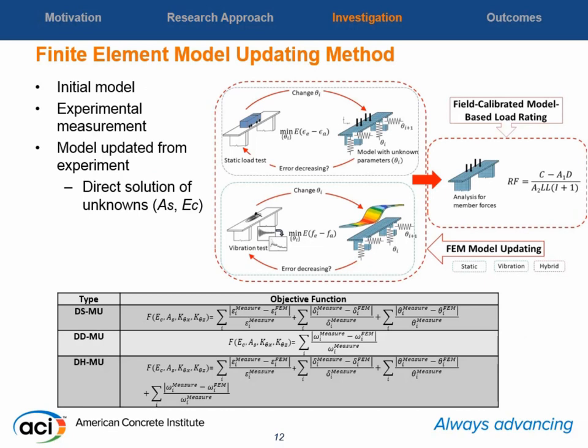For the finite element model, the first step is creating an initial model. We go to the bridge site, gather information about the bridge, measure dimensions, get information about the supports, and then create an initial simulation of the bridge. In the next step, we use experimental data from sensors installed on the bridge. After that, we do model updating by changing unknown parameters — in our case, area of steel and modulus of elasticity.